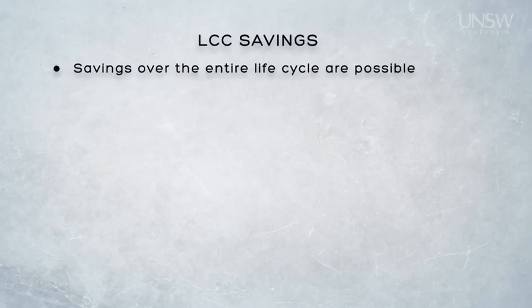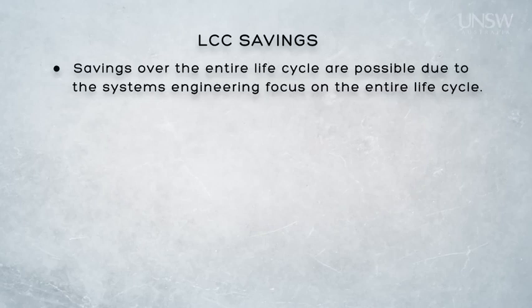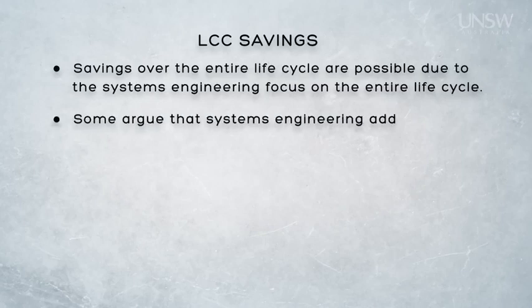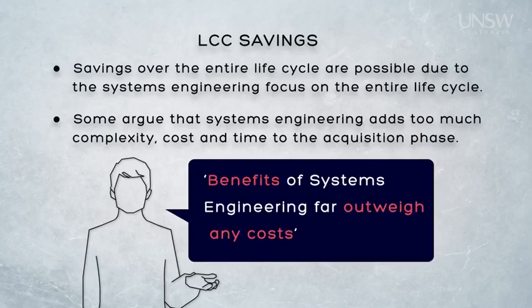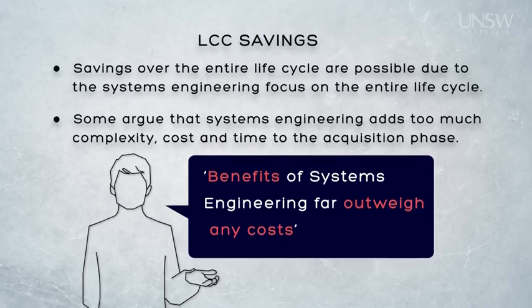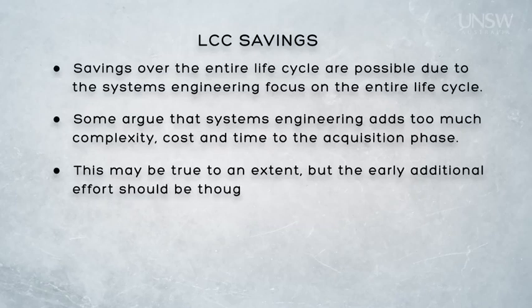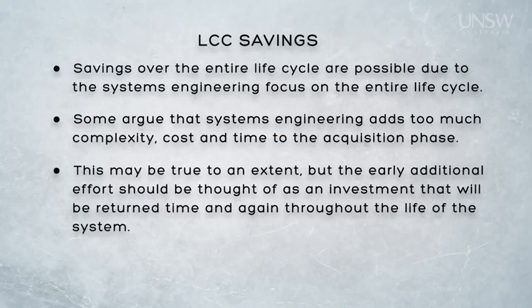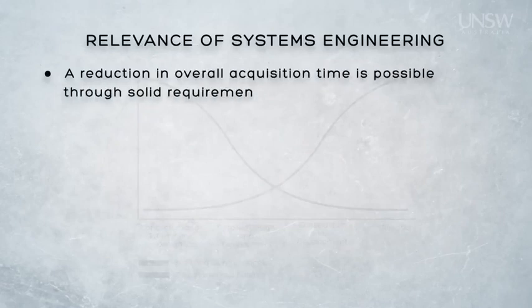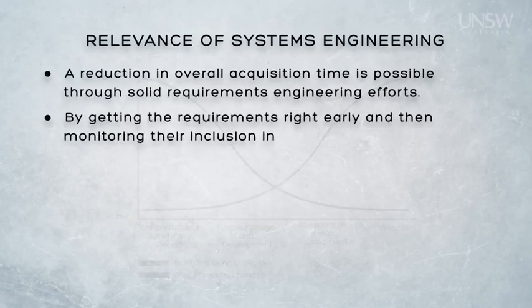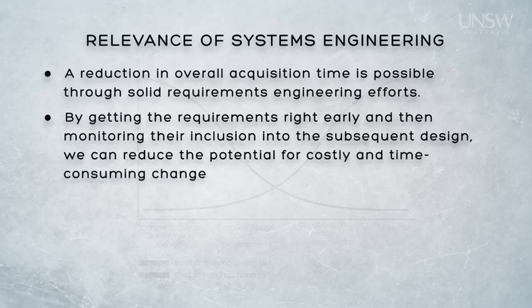The first and most obvious benefit is the scope for saving money during all phases of the system life cycle — life cycle cost savings. While some may argue that the additional resources and requirements imposed by systems engineering can increase costs, these increases are comparatively small and are generally felt in the very early design phases. If applied appropriately, systems engineering can ensure that savings achieved far outweigh the cost of implementing any small number of additional procedures and methodologies. Experience indicates that an early emphasis on systems engineering can result in significant cost savings later in the construction and production phases, in operational use, system support, and even in the disposal of the system. A reduction in overall acquisition time is possible through solid requirements engineering. By getting the requirements right early and then monitoring their inclusion into the subsequent design, we can reduce the potential for costly and time-consuming changes later. System failures, cost overruns, and schedule problems are often the direct result of poor requirements engineering. Poor requirements cannot be rectified by good design.